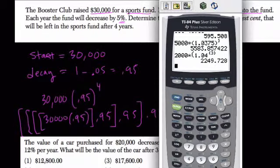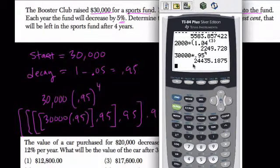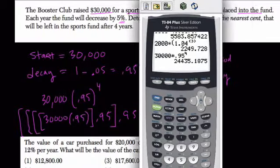So that would be annoying to do. So we can do this pretty quickly by doing 30,000 times 0.95 to the fourth power. So after four years, we'll have 24,435.